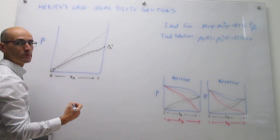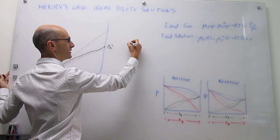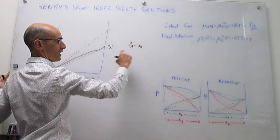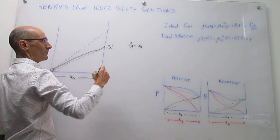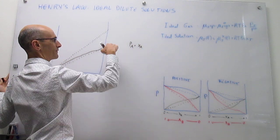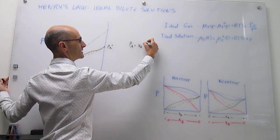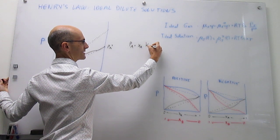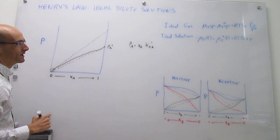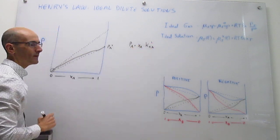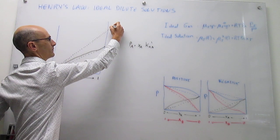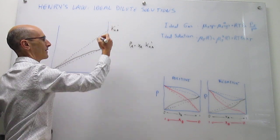Henry's law can be written as p_A equals a linear dependence on the mole fraction of A. The intercept with the pressure axis when the mole fraction becomes 1 is a different value from the pure vapor pressure of A. Instead, that is what we call Henry's constant, written as K sub A prime. The prime indicates there are going to be a few more versions of this law, so K sub A prime is this constant.